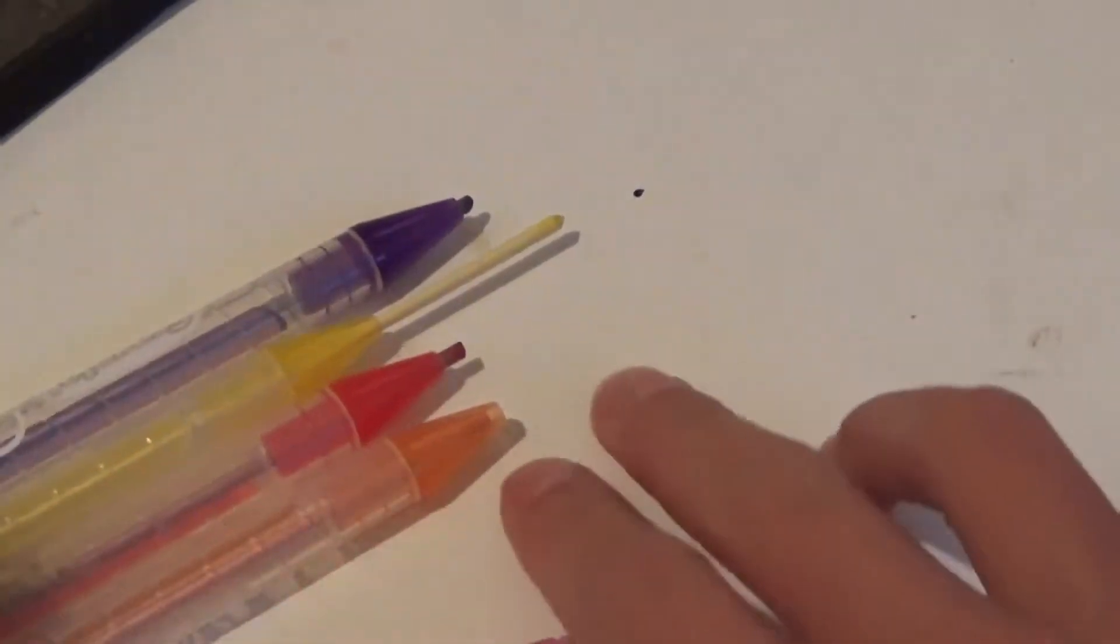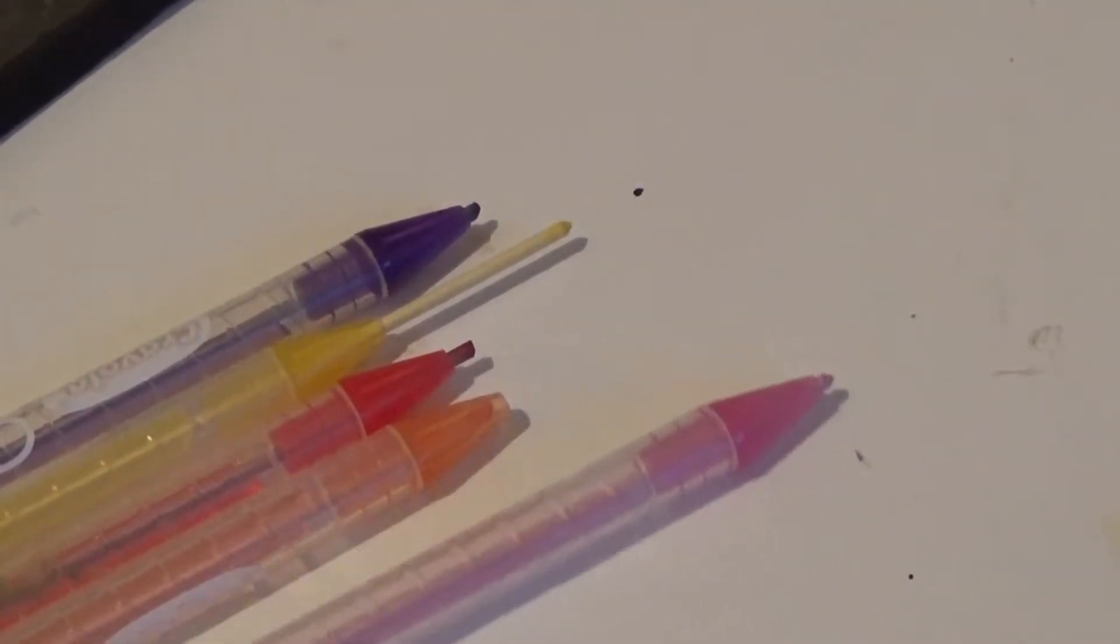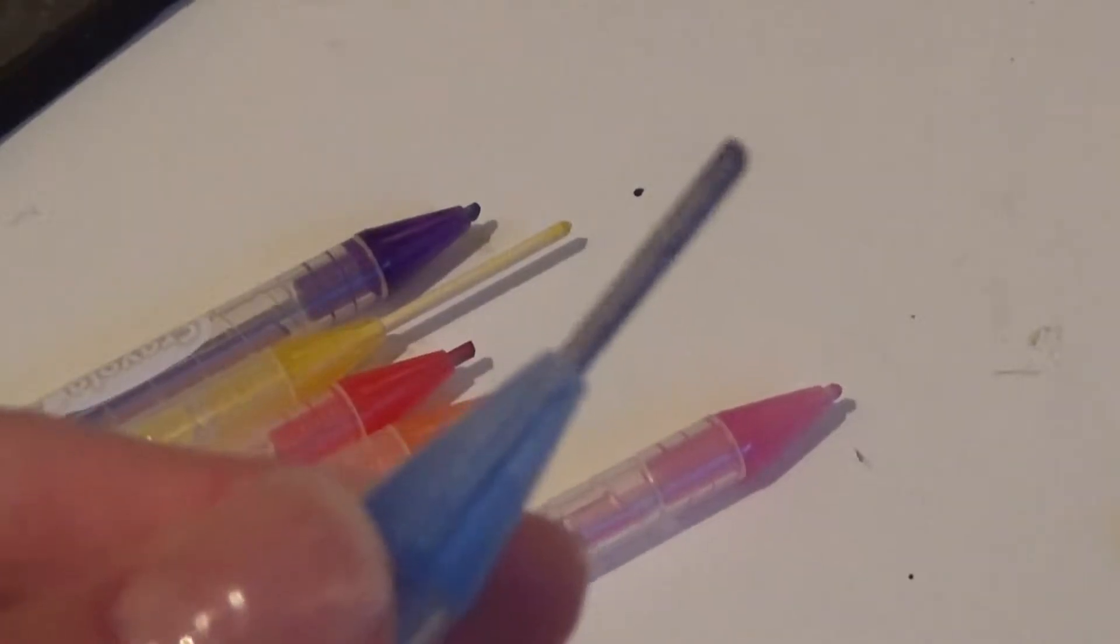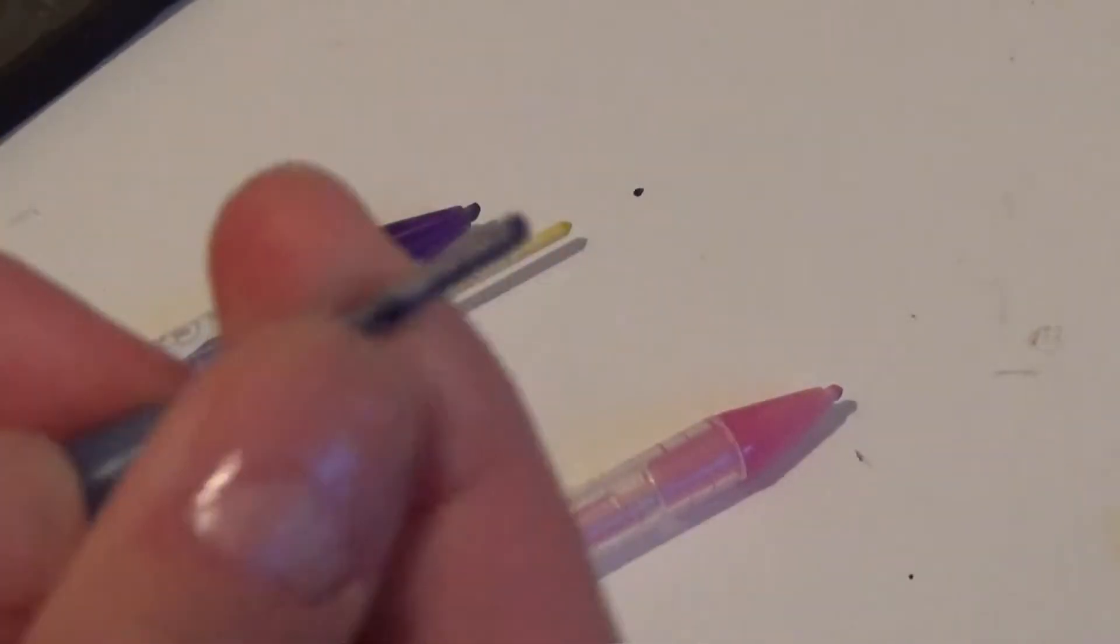So now we're going to make the colored pencils. I just dropped it. Let me get it. Okay, so I'm going to spin it out and cut that part off, and use that as the colored pencil lid.